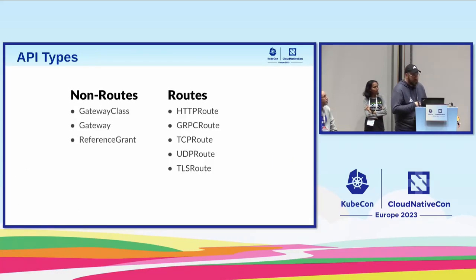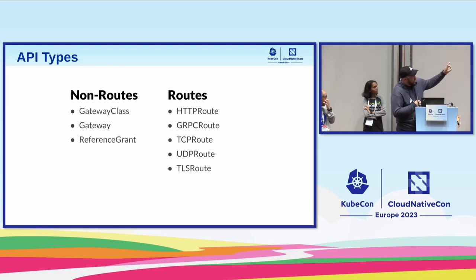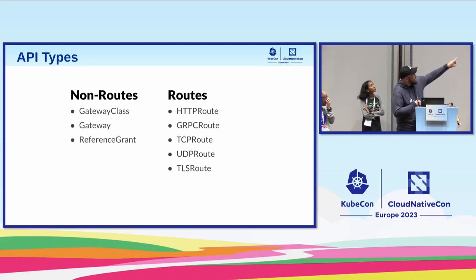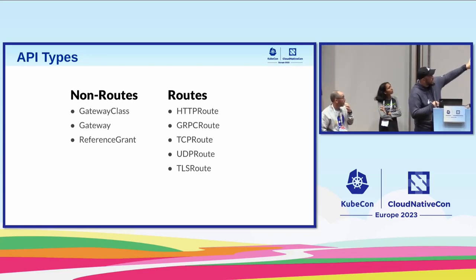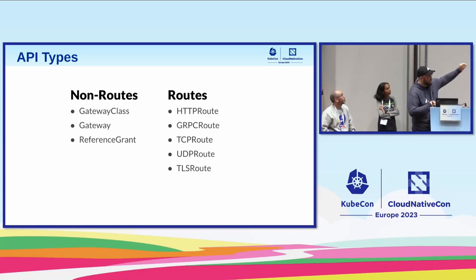To give a view of how far we go beyond ingress: while ingress only does HTTP traffic, Gateway API supports HTTP, GRPC, TCP, UDP, and TLS. We also have non-route types like gateway class, gateway, and reference grant — I'll talk about that one specifically.